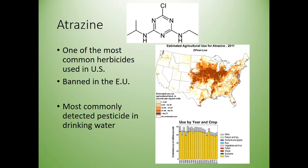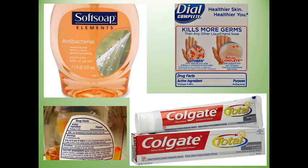Atrazine is one of these endocrine disruptors — it's banned in the European Union but is one of the most common herbicides in the US, most commonly detected in drinking water, used mainly where wheat and corn are grown. What it does is convert testosterone into estrogen — it can turn male fish into females, turn male frogs into females, and in people exposed long-term can cause gynecomastia, which is breast development in men. Researchers have been trying to get atrazine banned for years. Even more common endocrine disruptors include triclosan, found in antibacterial soap.